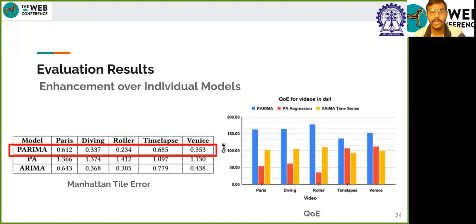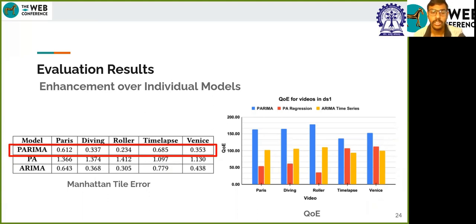Next, our experimentation shows the enhancement of PARIMA over ARIMA and the PA model employed individually. We see in the plot on the right that QoE for PARIMA is higher than both ARIMA and PA models. Similarly, on the left, the tile error for PARIMA is the least, thus showing that the augmentation of the two models has indeed enhanced our prediction.